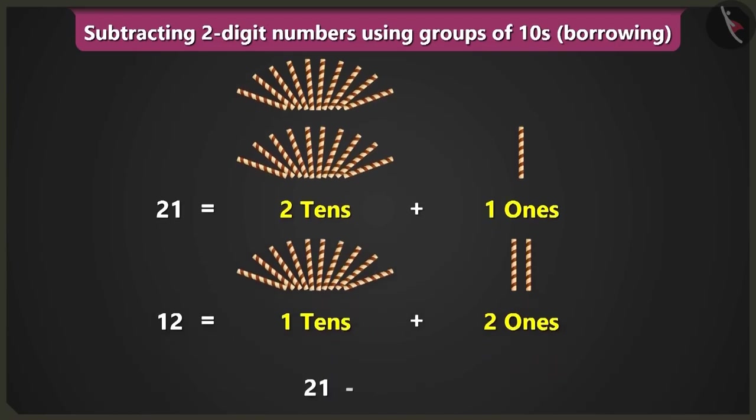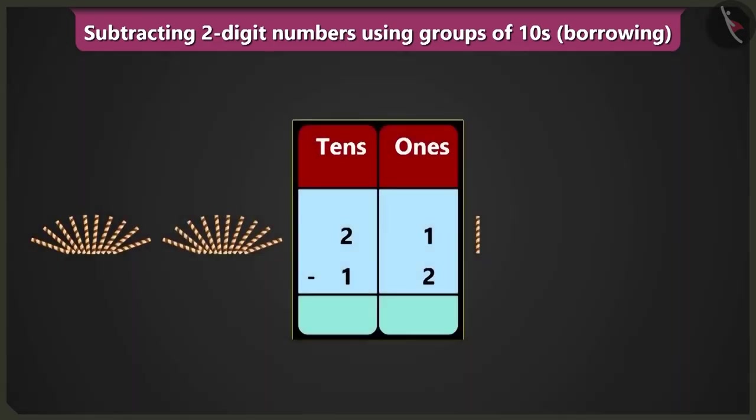Yes, so how many would twenty-one minus twelve be? We will write these numbers in the boxes of tens and ones, and then we will have to do the subtraction of the numbers in the box of ones.